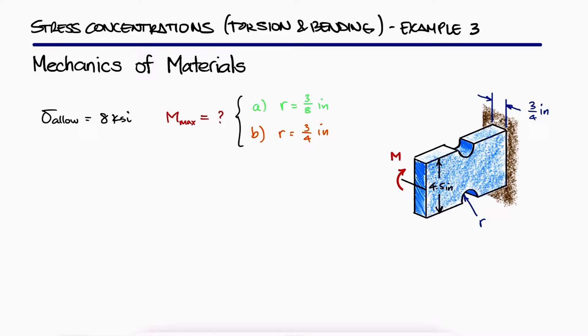This is the third example for the torsion and bending stress concentrations main video. The links to the other examples in that main video are in the description below. We know that the maximum normal bending stress will occur when the moment is maximum and it will happen at the stress concentration. We also know that this maximum stress should not exceed the maximum allowable stress.